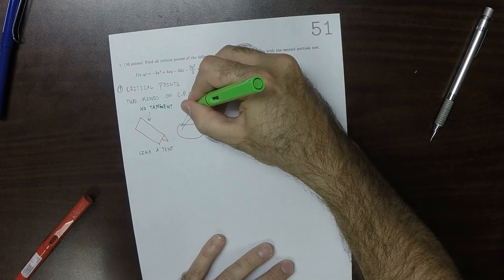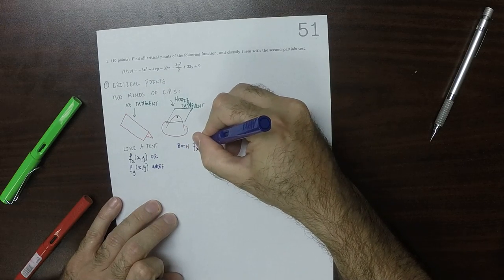But at the very top, it's flat and horizontal so that there is a horizontal tangent. So the analytic condition for this is that either partial is undefined, that's this condition, and the analytic condition for this one is that both partials are zero.